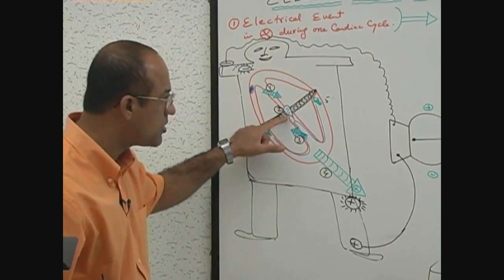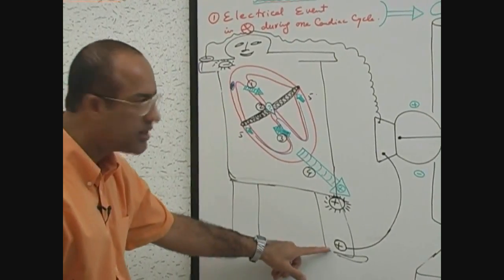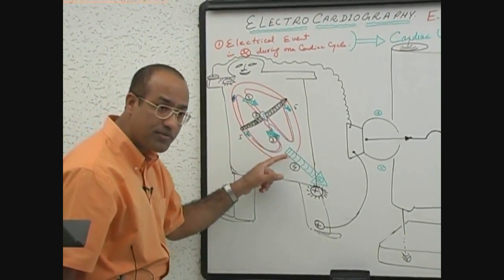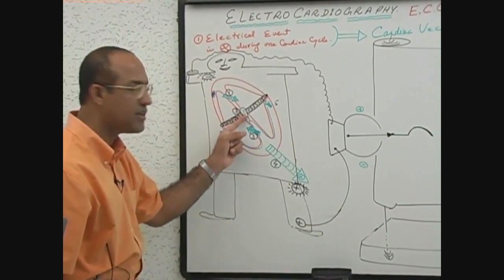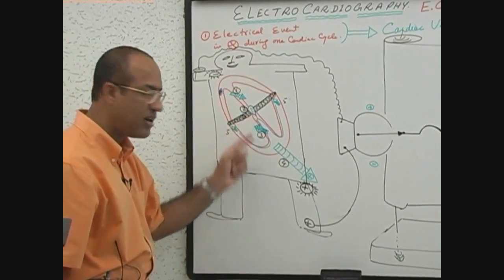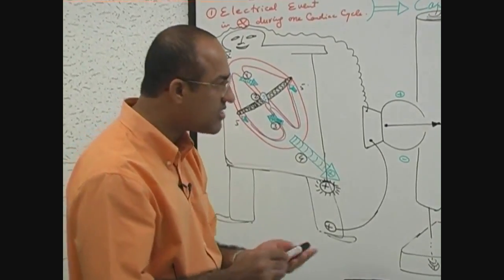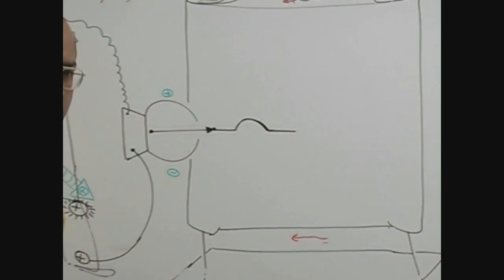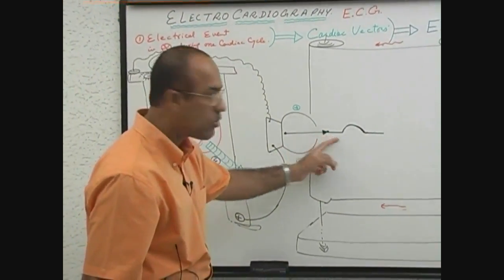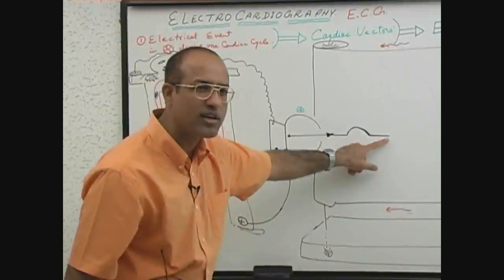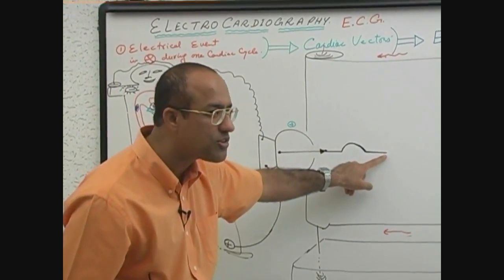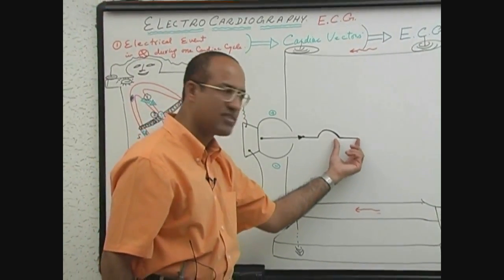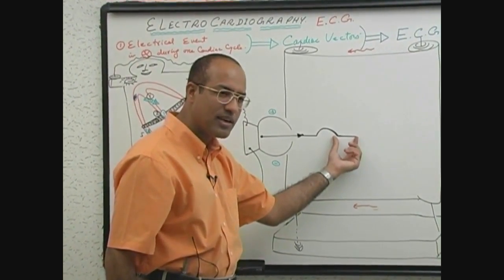When current is conducting through the AV node, the electrodes don't pick up any activity, so the needle remains straight. After the end of atrial depolarization and before the beginning of ventricular depolarization, current is held in the AV node. That electrical activity is so small that the electrodes sense nothing and the needle will not move — producing a straight line. This straight line represents conduction through the AV node.